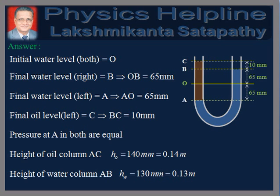Similarly, let the height of water column AB be equal to HW, which is equal to AO plus OB. Therefore, we get HW is equal to 130 mm, which is equal to 0.13 meters.